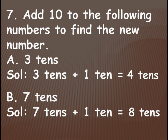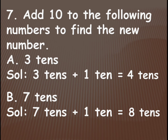So in this way you need to add 1 ten for any given number. If it is 4 tens, so 4 tens plus 1 ten becomes 5 tens. If it is 9 tens, so 9 tens plus 1 ten gives us 10 tens. 10 tens means 100 — 1, 0, 0. So in that way you need to write the numbers for any given tens — add 1 ten and write the new number.